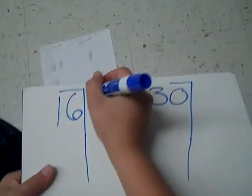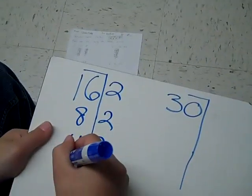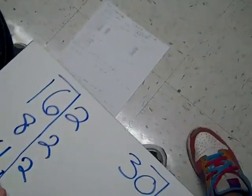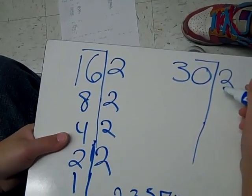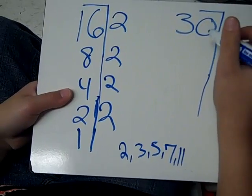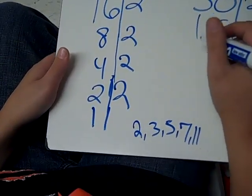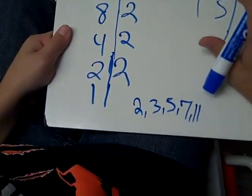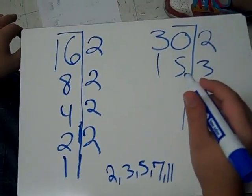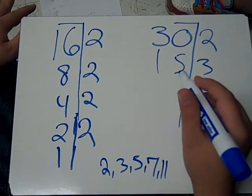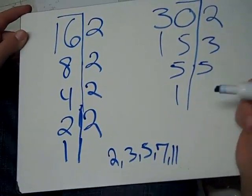I have 16 and 30. You do 16 divided by 2, which is 8, then 8 divided by 2, which is 4, then 4 divided by 2 is 2, then 2 divided by 2, which is 1. Then 30 divided by 2 is 15, and you can't divide 15 by 2, so 15 divided by 3 is 5, and 5 divided by 5 is 1. And that's the ladder method.